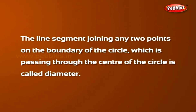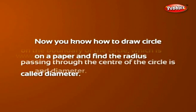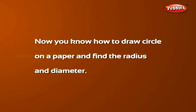The line segment joining any two points on the boundary of the circle which passes through the center of the circle is called the diameter. Now you know how to draw a circle on a paper and find the radius, diameter, and the center of the circle.